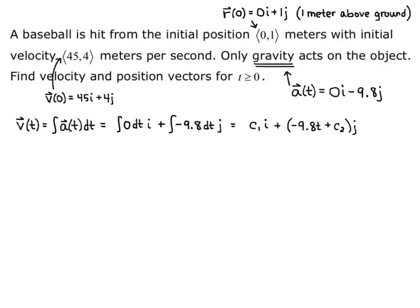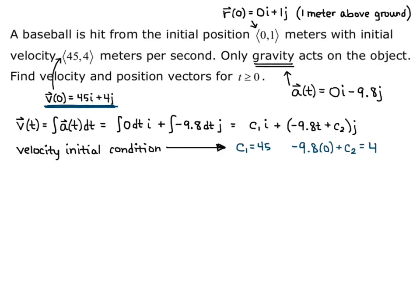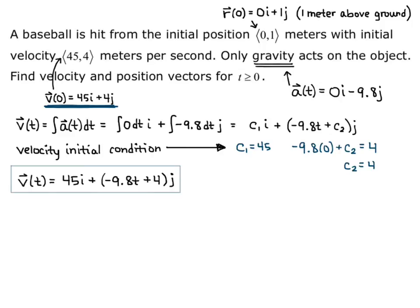Now we apply the velocity initial condition v(0) = 45i + 4j. The i component gives c1 = 45, and from the j component: −9.8(0) + c2 = 4, so c2 = 4. Plugging those back in, our velocity function is v(t) = 45i + (−9.8t + 4)j.